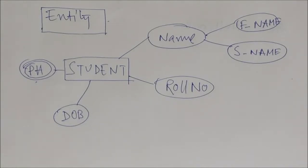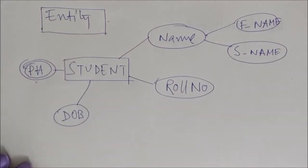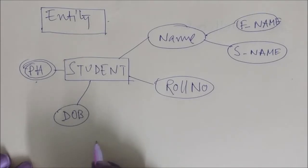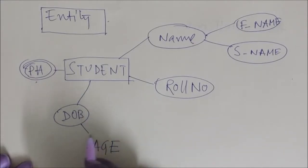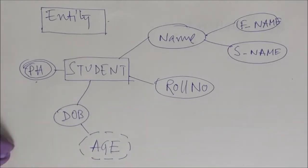Next is derived attribute. For example, we have date of birth, and from date of birth we can calculate another attribute called age. Derived attributes are kept in a dashed ellipse.